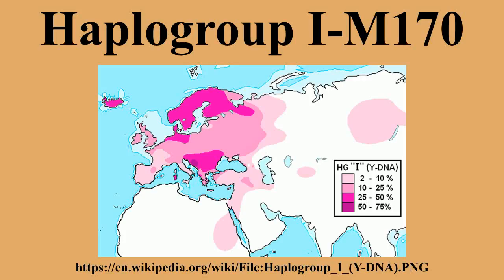The haplogroup reaches its maximum frequency in the Dinaric Alps. A European point of origin for I-M170 is generally proposed. However, the concentration of its sibling Haplogroup J in Southwest Asia, and the discovery in 2012 of living examples of Haplogroup IJK in Iran, may imply that all three haplogroups originated closer to Anatolia and/or the Caucasus.